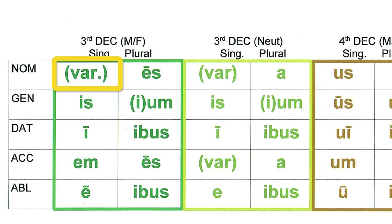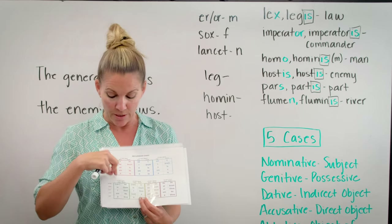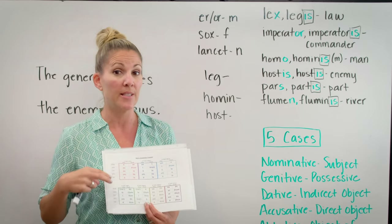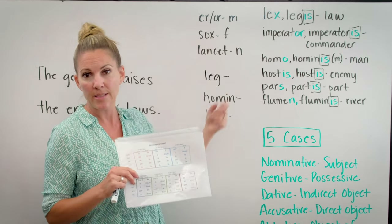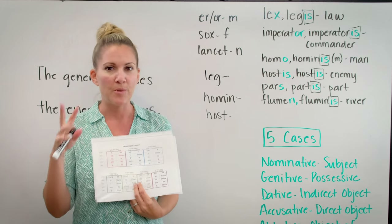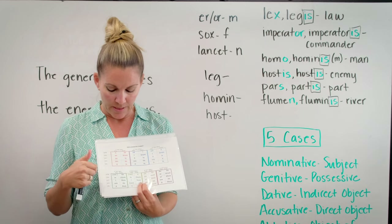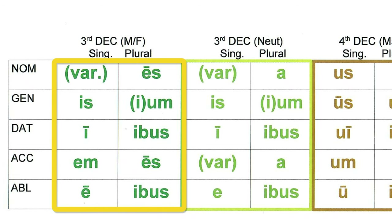Starting at the top left, in the nominative singular you'll see 'VAR.' standing for 'various,' meaning there are so many different endings in the nominative singular of the third declension it would be too much to cram into that space. Could be ER, OR, S, O, X, LANCET endings. So usually you'll see 'various' there, just letting you know there are a lot of different options. Then the endings are: IS, EM, AS, OS, M, IBIIS, SIBS — those are the masculine and feminine.